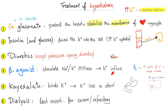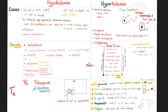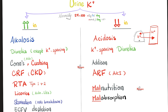All diuretics can treat hyperkalemia, except potassium-sparing diuretics. Beta-agonists work too, because they stimulate the sodium-potassium pump. Kayexalate is a potassium-binding resin you take by mouth; it goes to your gut and binds potassium so it cannot be absorbed, and both leave together through the stool — this decreases hyperkalemia. When everything fails, dialysis removes potassium. To summarize: treatment for hyperkalemia includes calcium gluconate, insulin with glucose, diuretics, beta-agonists, kayexalate, and dialysis. To treat hypokalemia, give the patient potassium; you can also give beta-blockers, which inhibit the sodium-potassium ATPase and cause hyperkalemia.